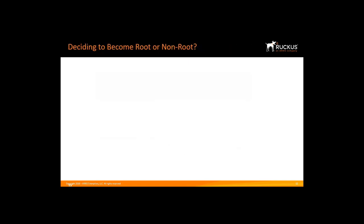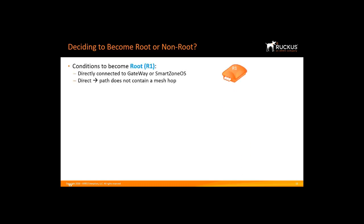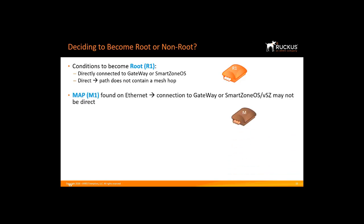Let's review how an AP decides to become a root AP or a non-root AP. If the AP discovers a gateway or a controller on its Ethernet interface and its mesh hop count is zero, then it will become a root AP. An AP will become a mesh AP if it discovers a gateway on its wireless interface, or if it does not discover a gateway on its direct Ethernet connection. It's important to note that all non-root APs advertise an e-beacon on the Ethernet interface to help facilitate both discovery and resolution of MAP and EMAP functions.